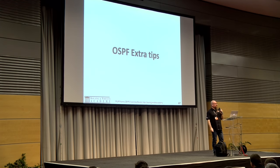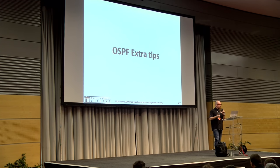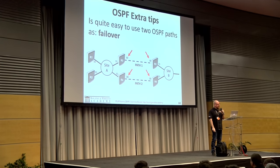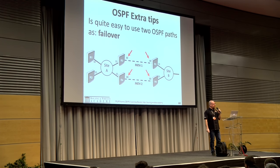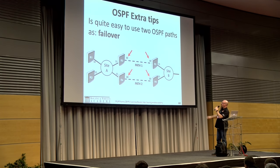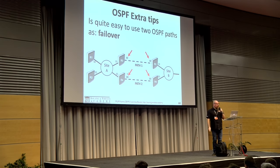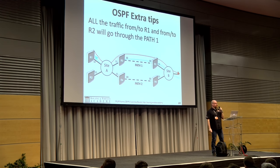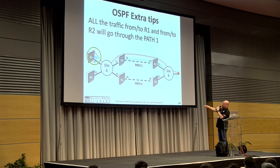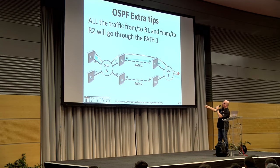Now the extra tip — a very interesting OSPF feature. It's quite easy to use two OSPF paths as a failover. Almost everybody in this room knows how. Using two paths connecting site A to site B and adjusting the cost — for example 10, 10 on the main path and 30 on the backup — all traffic from site A to site B flows through path 1. Both upload and download go through path 1.